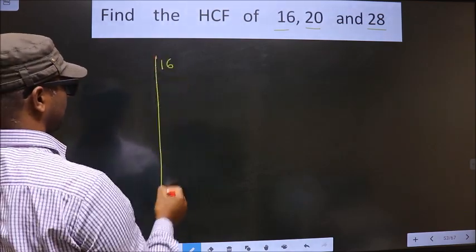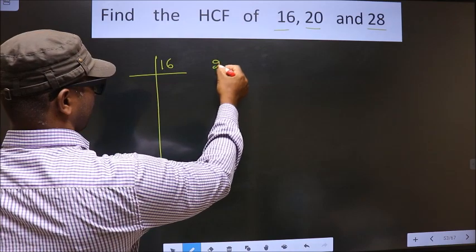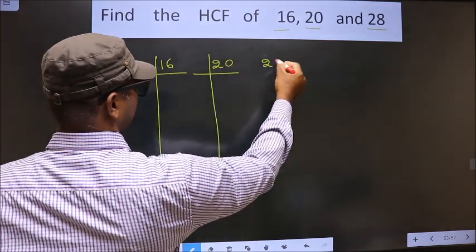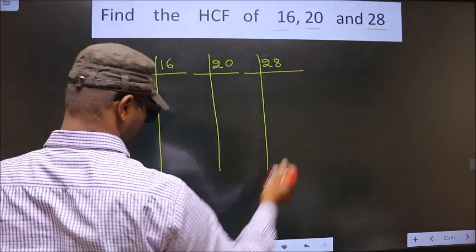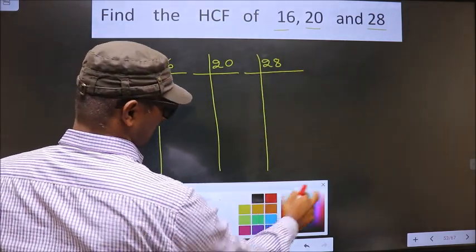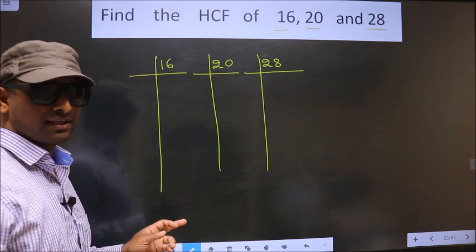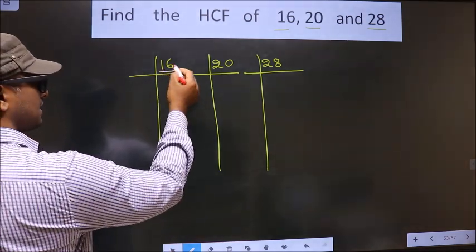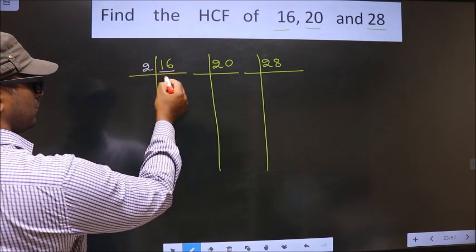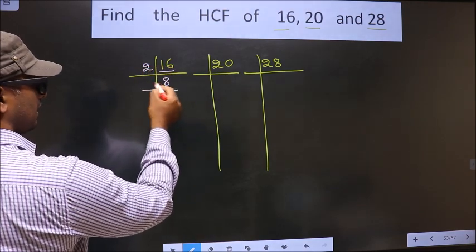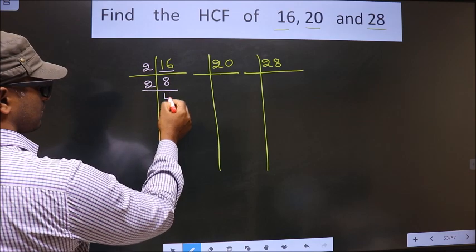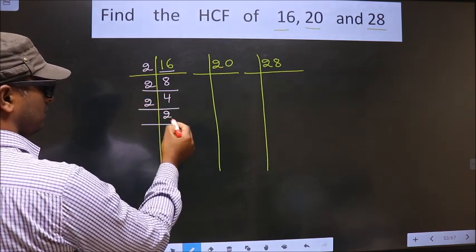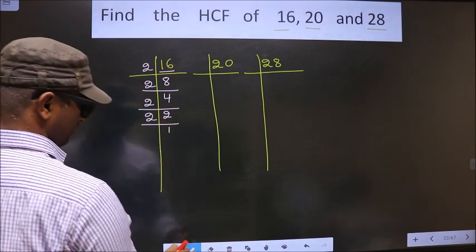16, 20, and 28. Here we have 16. 16 is nothing but 2 times 8. Now 8 is 2 times 4. 4 is 2 times 2. Now 2 is a prime number so we take 2 times 1 is 2.